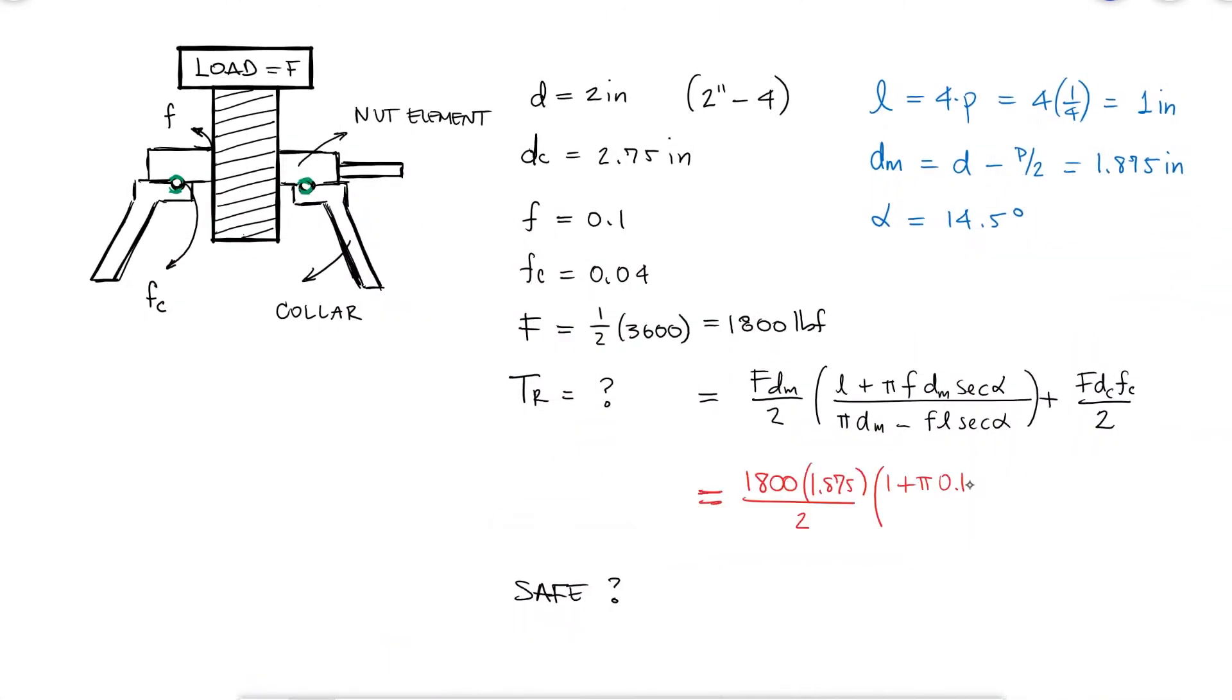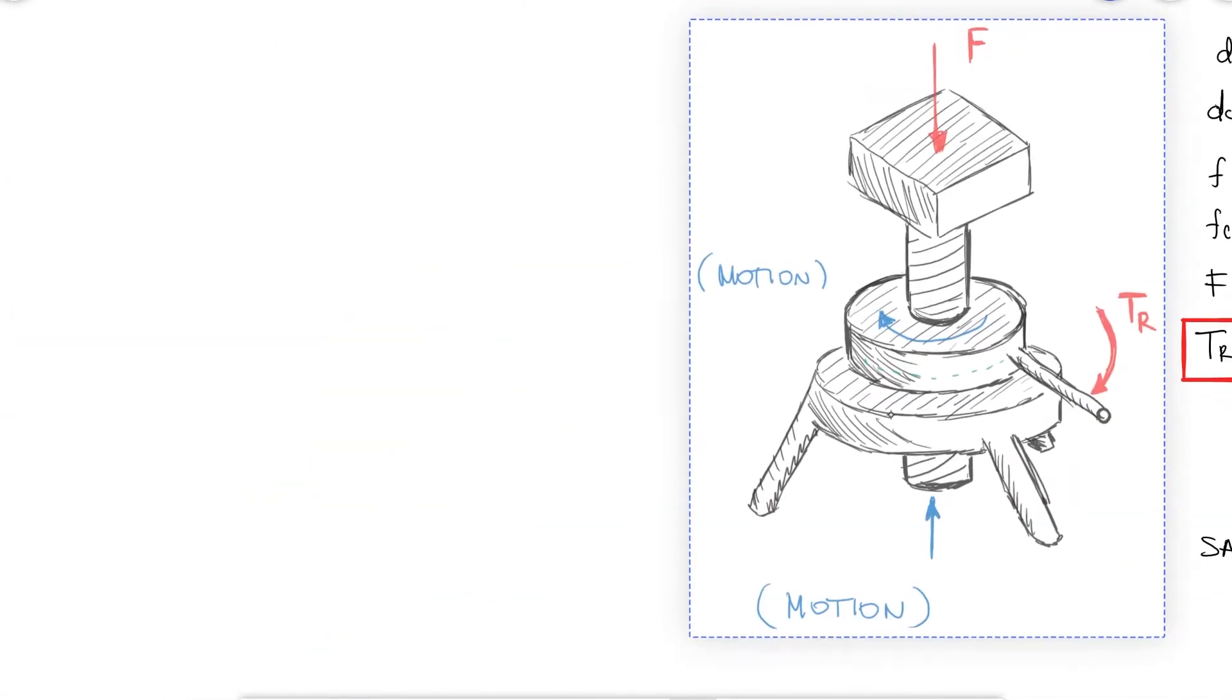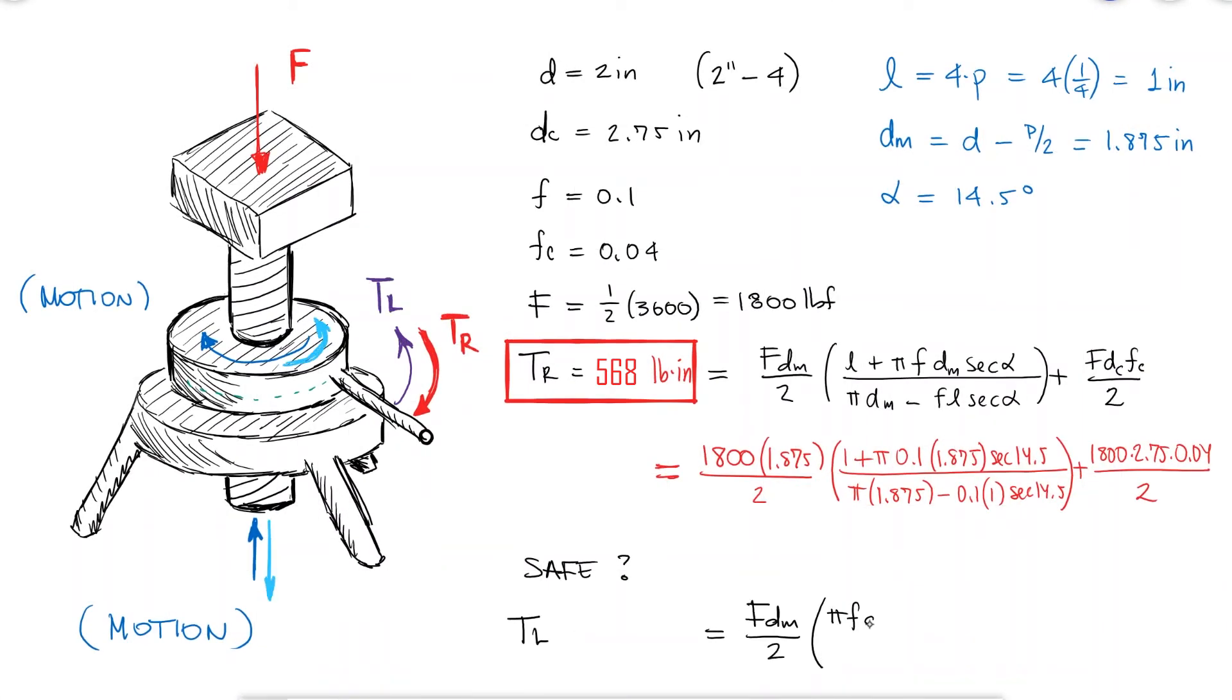This torque equals 563 pound-inches, but do we need to impart a torque in the opposite direction to bring down the car?